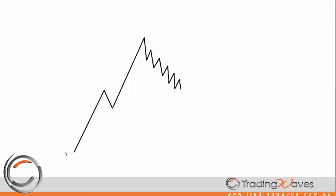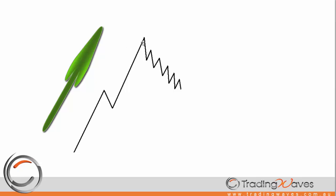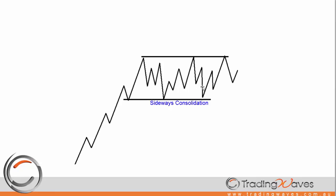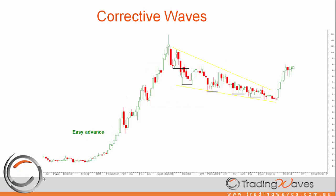When the market starts an impulse wave — a fast move in the direction of the trend — it will then either need to correct in price, giving us a sharp pullback, or it will correct in time, which is a time-consuming sideways consolidation. A corrective pattern usually occurs at the end of an impulse wave and is recognized by its overlapping nature.